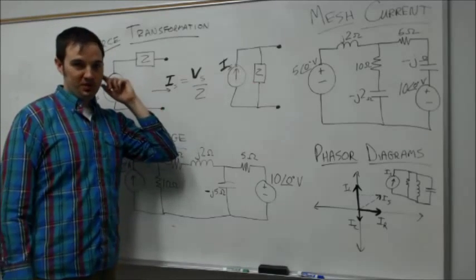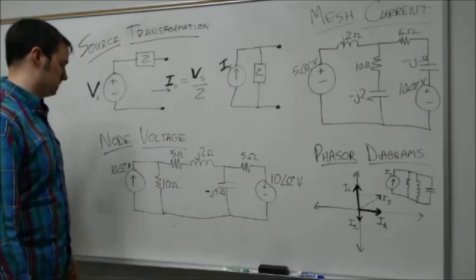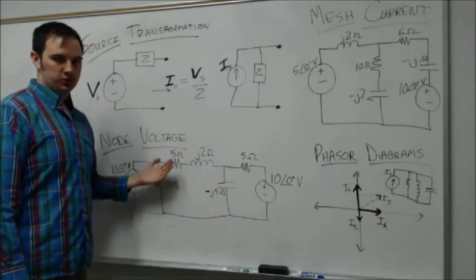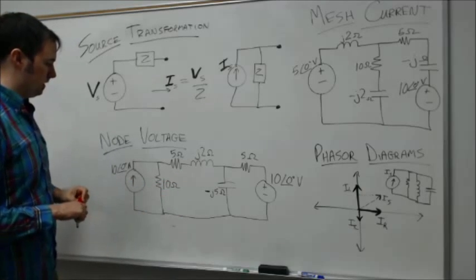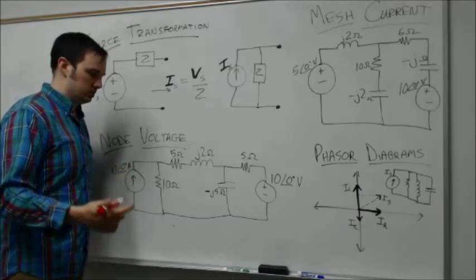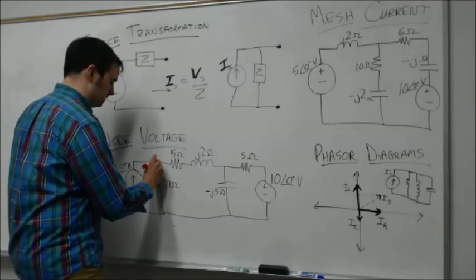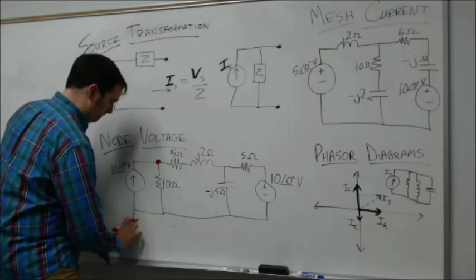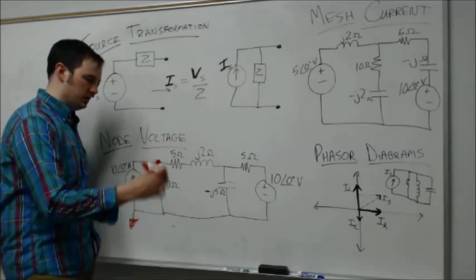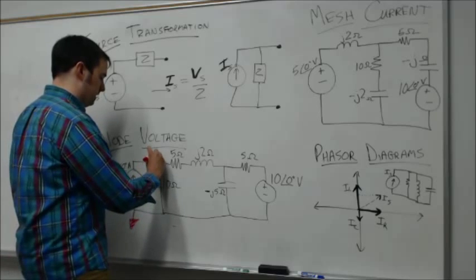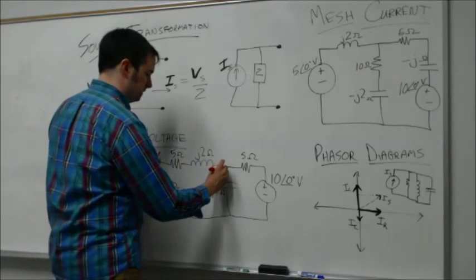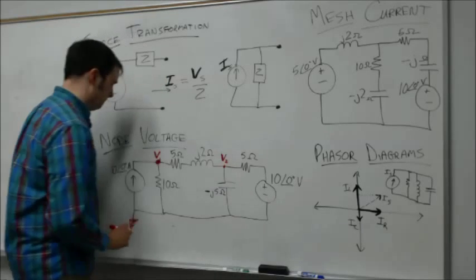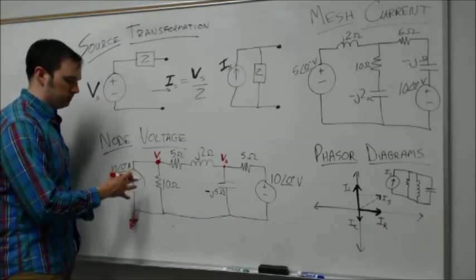For node voltage analysis, the approach is very similar to what we did before, the only difference being that we're working with complex impedances. We define the reference node, typically the bottom one, and then the node voltages are phasor quantities V1, V2. We write the equations very similarly.